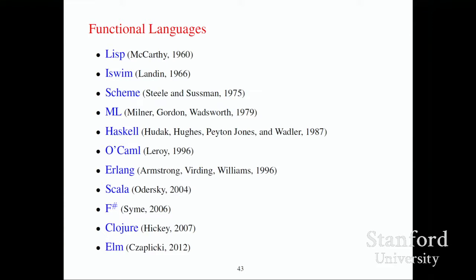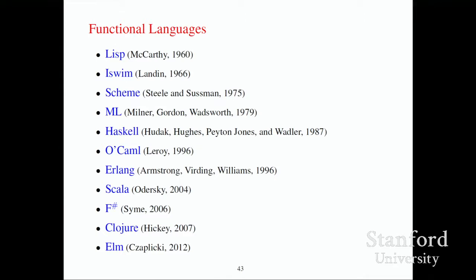All of these correspondences being discovered independently — three times people found the same thing — is powerful evidence that it's discovered, not invented. Twice independently, people found natural deduction and lambda calculus, and they turned out to be isomorphic. It happens again for Hindley-Milner, for Girard-Reynolds, again and again. These languages have a core that is something discovered, not invented. Probably most of you use programming languages other than these, and those languages — many of them — are invented, not discovered. And you can tell, can't you? This is my invitation to go off and learn a programming language that is discovered.